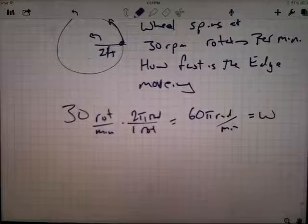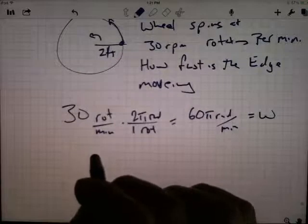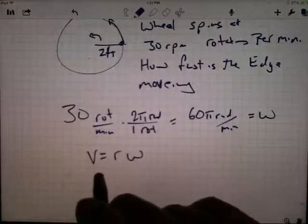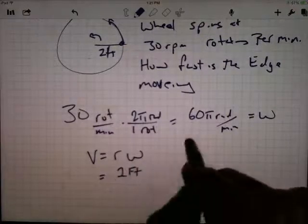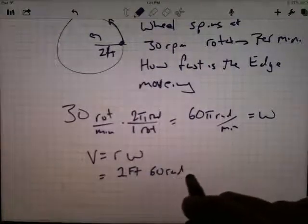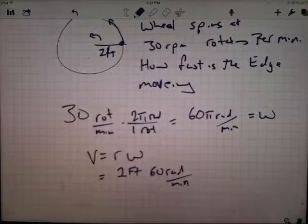This is the angular speed. I want to convert the angular speed into the linear speed. Well, the linear speed is the radius times the angular speed, so the radius here is two feet, the rotational speed is 60 pi radians per minute.